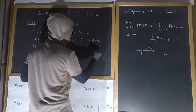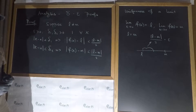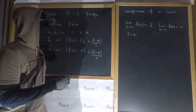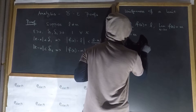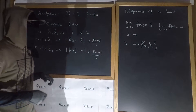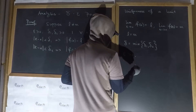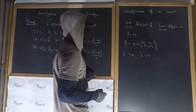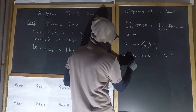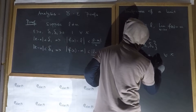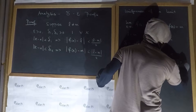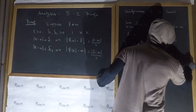Since epsilon is any small positive real number as small as we'd like, we can in particular make epsilon equal to |L − M| / 2. Then we can write the following: if we let delta equal the minimum of delta-one and delta-two — that is, the smaller of delta-one and delta-two — then for every epsilon greater than zero, there exists a delta greater than zero, chosen in this way, such that for all x, whenever |x − a| < delta, it follows that |f(x) − L| < epsilon and |f(x) − M| < epsilon.